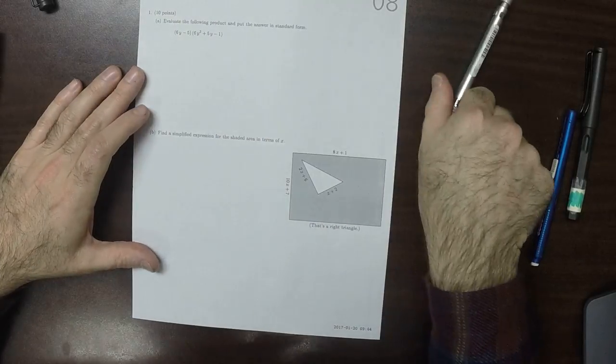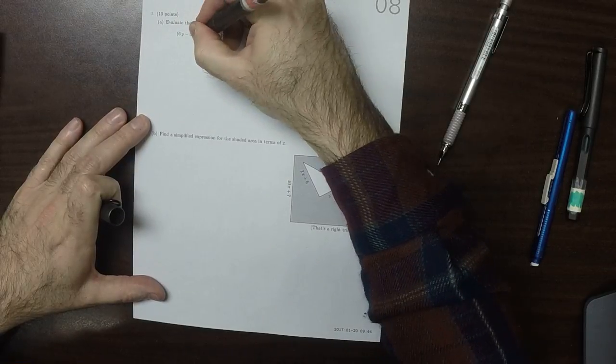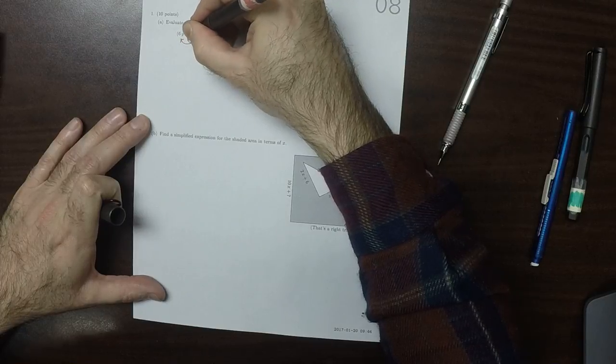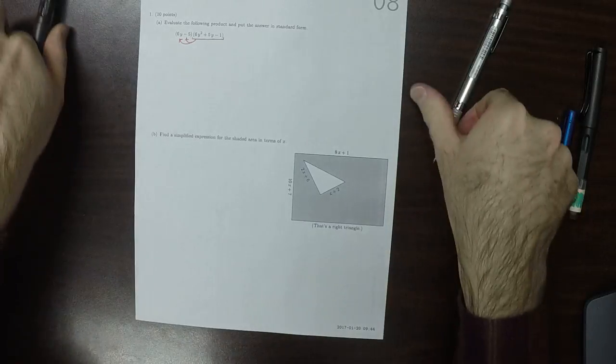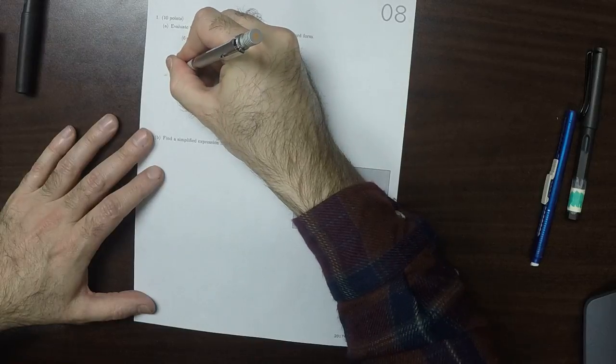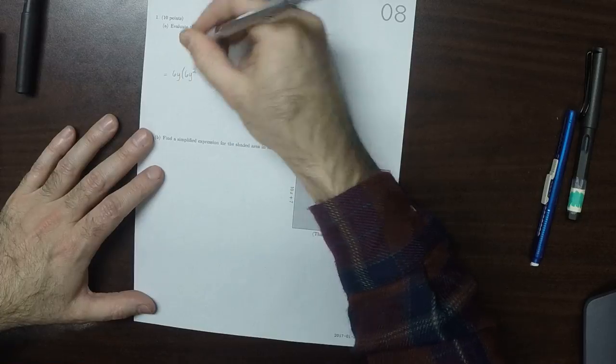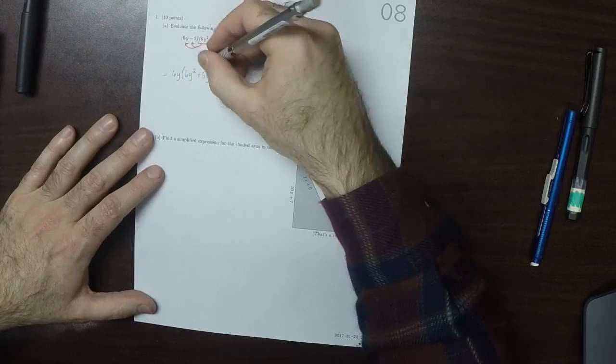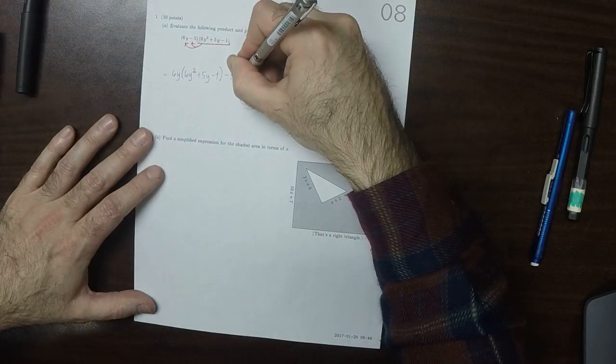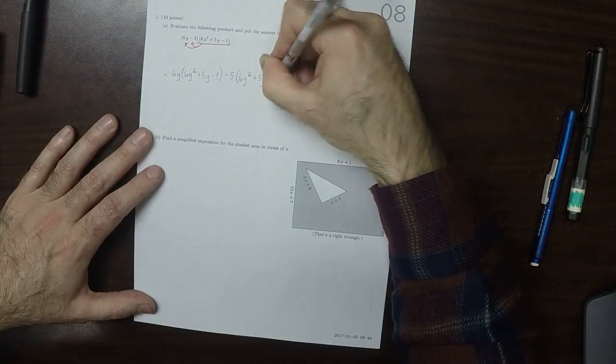This will be distributing. So I'll distribute this to both of these. So this would be 6y multiplied by 6y squared plus 5y minus 1, and then minus 5 multiplied by 6y squared plus 5y minus 1.